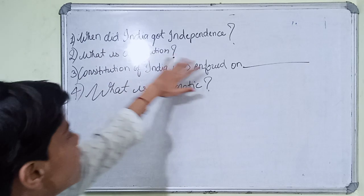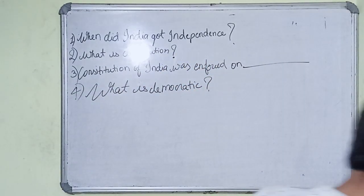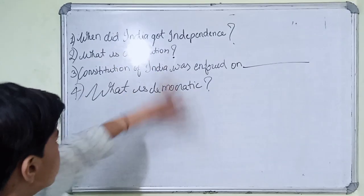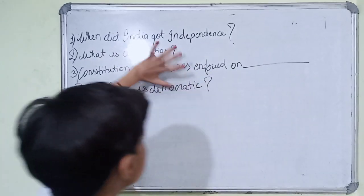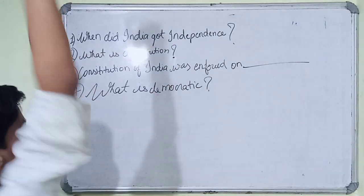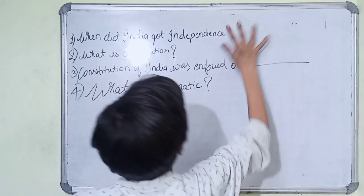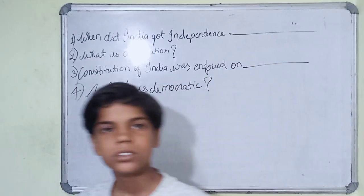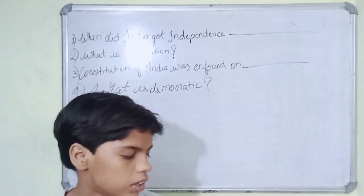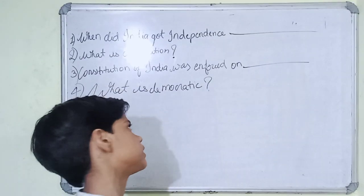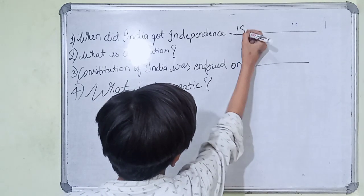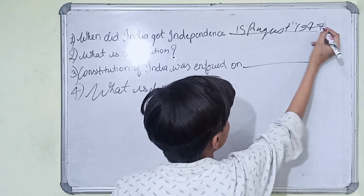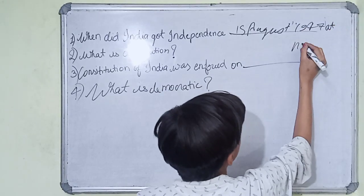First question: When did India get independent? This is the first question from Constitution and democracy. The answer is: on the night of 15 August 1927.